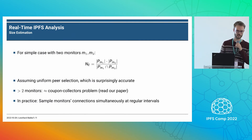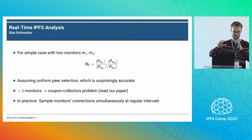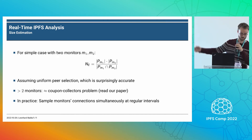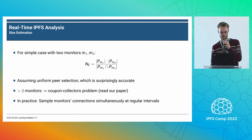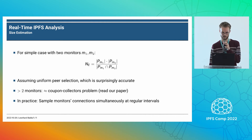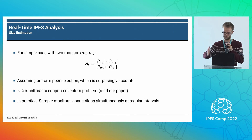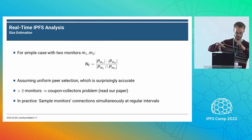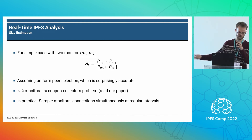Another thing we can do is estimate the size of the network using multiple vantage points. For two vantage points, you can model this as an urn with balls of two colors. For more than two monitors, we modeled this as a modified coupon collector's problem, which is more complex — and I'm quite glad someone else did that math, not me. We have it in our paper and it works. In practice this isn't completely real-time — we sample monitors at intervals and compute the estimate — but it gives us the size of the entire network including DHT servers, DHT clients, and everyone.